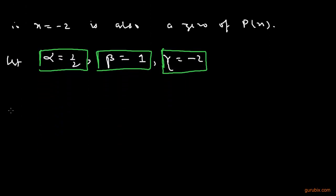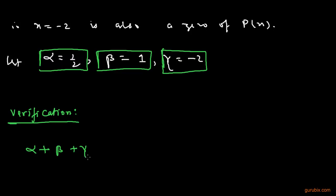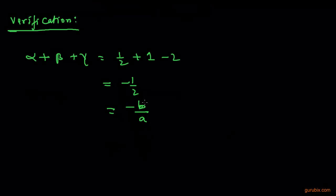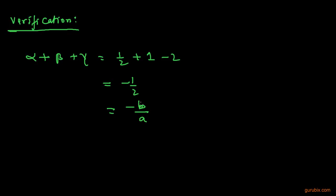First, we find α + β + γ = 1/2 + 1 - 2 = -1/2. We can write this as -b/a. This relationship is verified because b is the coefficient of x² and a is the coefficient of x³.